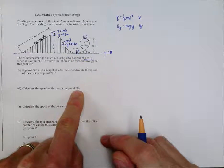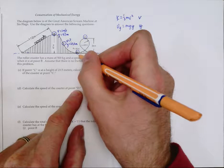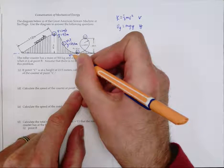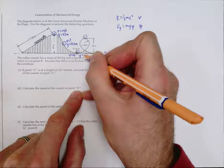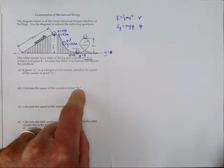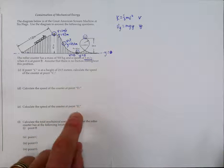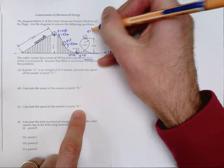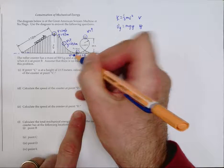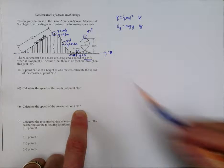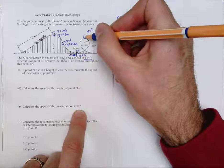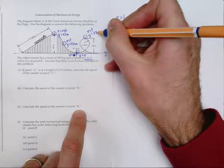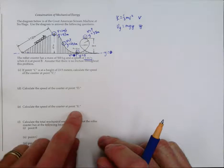Later on they ask us to find the speed at D. The speed at D is unknown, and y at D is zero — it's right at ground level. At E, the speed is also unknown but y equals 38 m. Those are the key values we've identified at each important location.